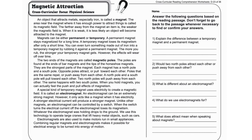We use this technology to operate large cranes that lift heavy metal objects such as cars. Electromagnets are also used to make motors run in small appliances. Combining regular magnets and electromagnets makes it possible for electrical energy to be turned into energy of motion.